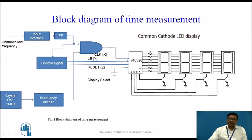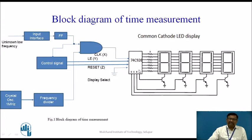This consists of four decade counters. So, we require four seven-segment displays, which are displayed using the multiplexing technique. This counter counts the clock pulses. Counter data is latched at the end of the counting period. And the counter is reset by using this reset input to make this counter ready for the next measuring cycle. The display select pin is connected to ground so that the latched data in the 74C926 will be displayed on the display system.